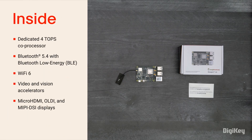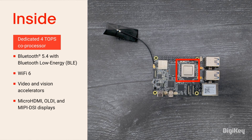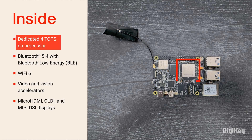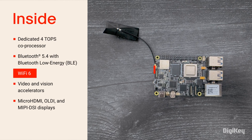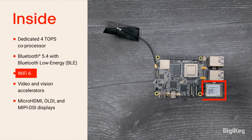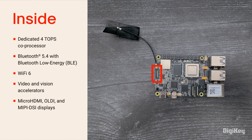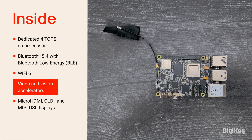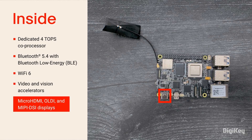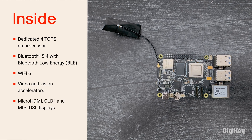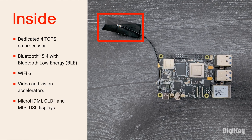Inside the box, you'll find the Beagle-Y AI Board, designed to simplify AI development on a dedicated 4-TOPS co-processor. It also features Bluetooth 5.4, Wi-Fi 6, Gigabit Ethernet, PCIe Gen 3, video and vision accelerators, support for three simultaneous displays, and it includes an attached antenna.